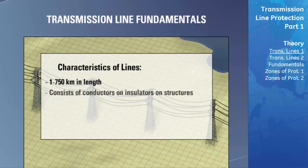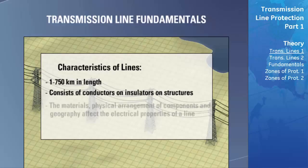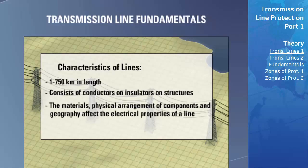Transmission lines consist of conductors that are supported by structures to hold the conductors high above the ground. These conductors are connected to the structure using devices called insulators, which ensure that there is no electrical connection between the conductors and the supporting structure. The structures can be constructed of wood, metal, or concrete. The material used, the physical arrangement of components, and the geography greatly affect the electrical properties of the line, and all of these factors must be considered when determining the best method of protecting the transmission line.